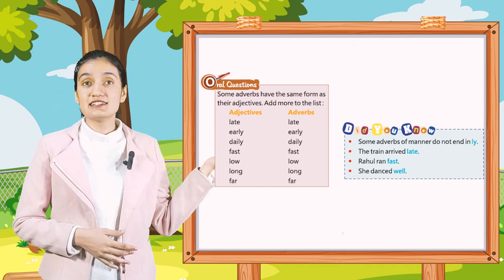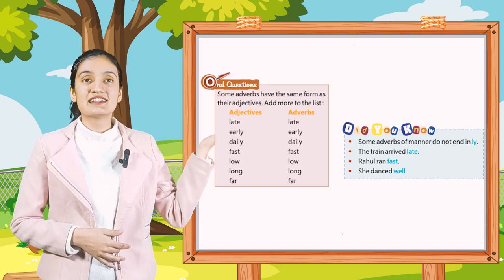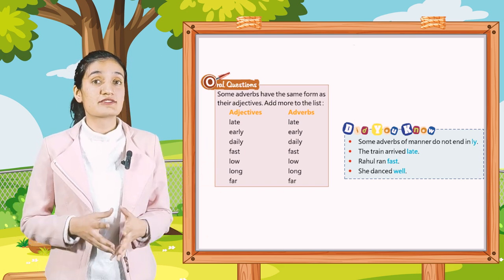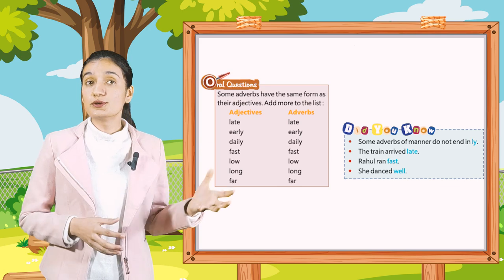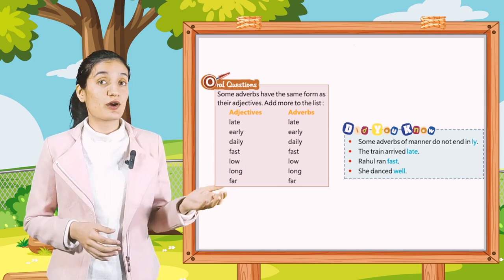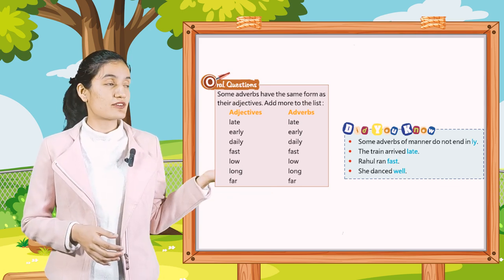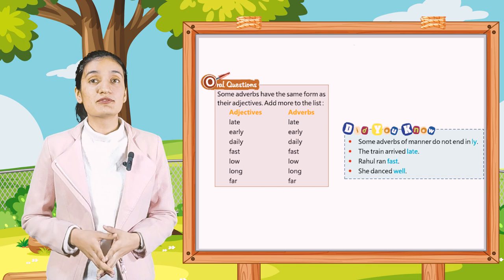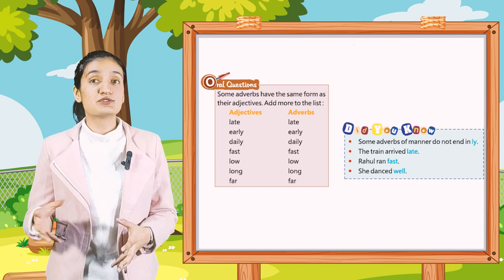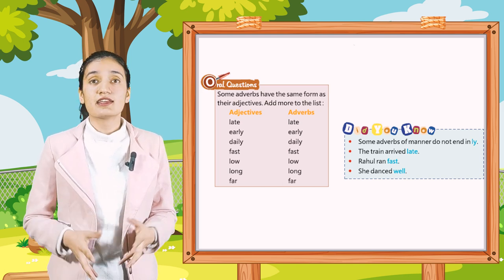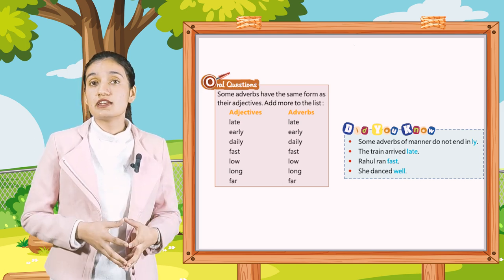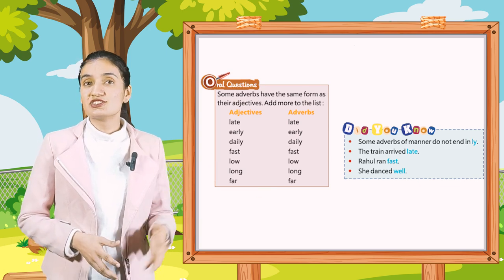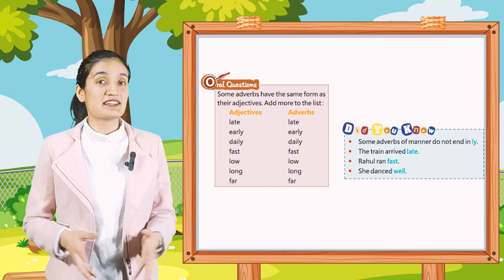Here are adjectives and their adverbs that share the same form: late/late, early/early, daily/daily, fast/fast, long/long, low/low, far/far. Did you know — some adverbs of manner do not end in '-ly'. For example: the train arrived late, Rahul ran fast, he danced well.